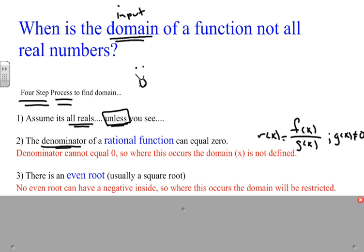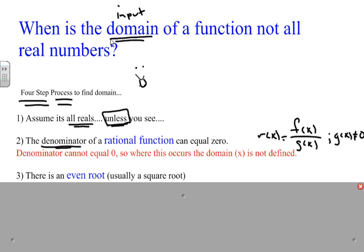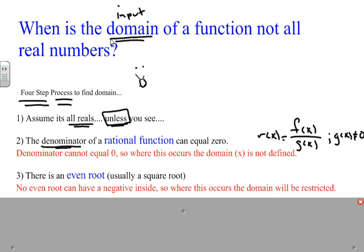Another instance is when there is an even root, usually a square root. No even root can have a negative inside. You can't take a square root or an even root of a negative number — that's impossible, you get imaginary numbers. So where this occurs, the domain will be restricted.